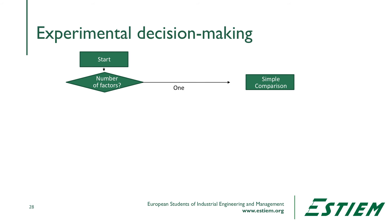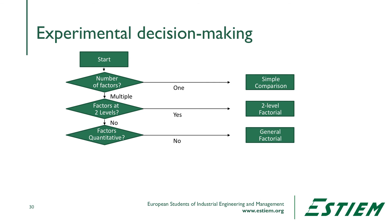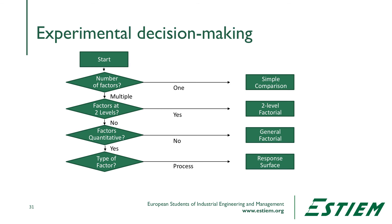A standard experiment starts by asking how many factors there are. If there's one, we can do one factor analysis carefully. If we have two factors, we can do a two-level factorial design to capture the unseen state where both are moving at once. Are the factors quantitative? If not, we can do a general factorial design — you'll see that in Minitab. If they are quantitative, we can have a process variable giving us a response surface, or a mixture design as in chemicals, cooking, or pharmaceuticals. We're going to focus on the simple two-level full factorial design, deliberately changing levels in a pattern we can analyze.